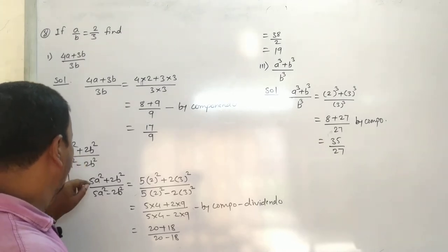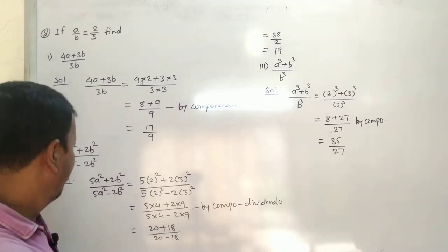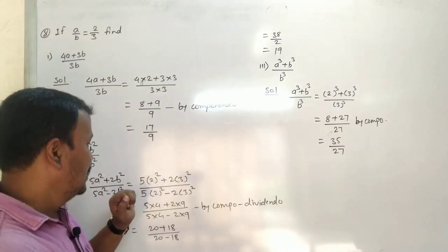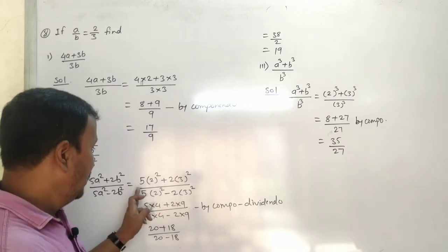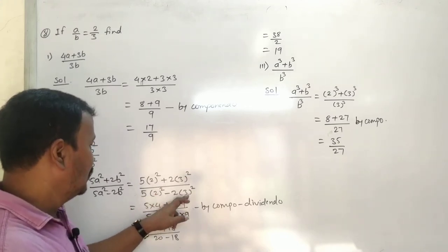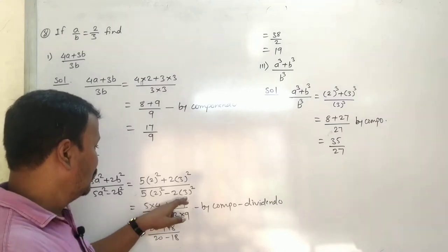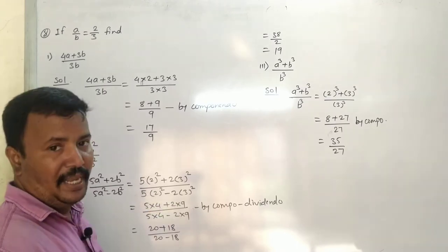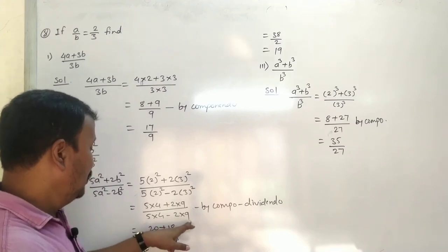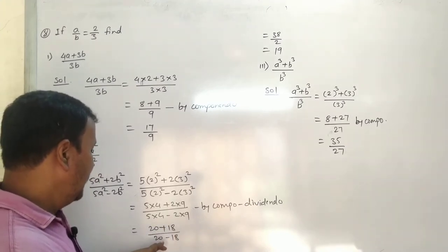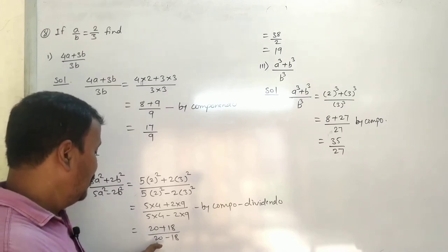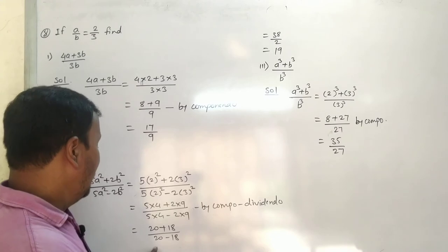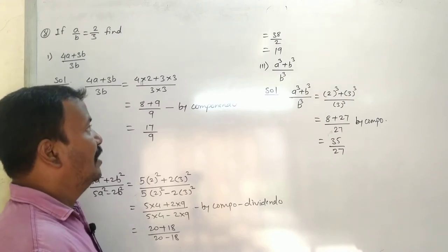Second sum: 5a squared plus 2b squared upon 5a squared minus 2b squared. Substituting a=2, b=3: 5 into 2 squared plus 2 into 3 squared, upon 5 into 2 squared minus 2 into 3 squared. 2 squared is 4, 3 squared is 9. So 5 into 4 is 20, 2 into 9 is 18. We get 20 plus 18 upon 20 minus 18.